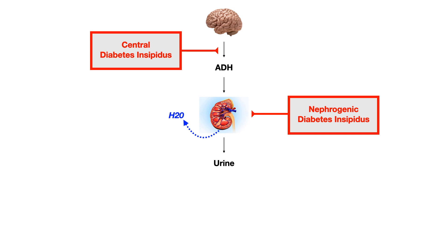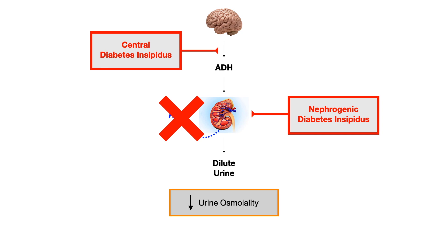Regardless of whether you have central DI and aren't making enough ADH, or nephrogenic DI where you can make it but the kidney can't respond to it, in both scenarios the body cannot adequately reabsorb water. Because of that, what should be regular or concentrated urine becomes dilute urine — instead of that water being reabsorbed, it stays in the kidney and constantly gets urinated out. Hence the symptoms of polyuria and polydipsia. Dilute urine will lower the urine osmolality.